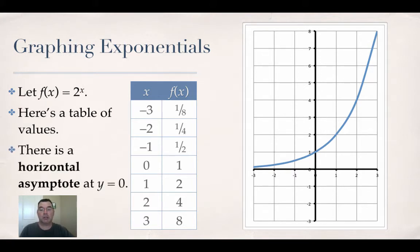What I want you to notice is there is a horizontal asymptote at y equals 0. The function will get closer and closer to 0 as you go to the left, as x gets very, very negative. You'll get closer and closer to 0, but you'll never actually get there because I can't raise 2 to any exponent and get 0 as my answer.